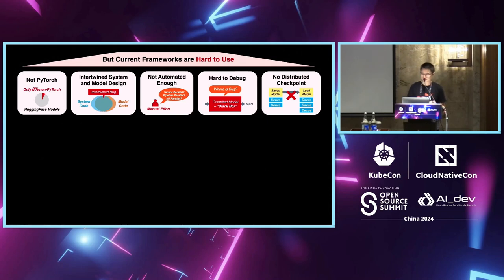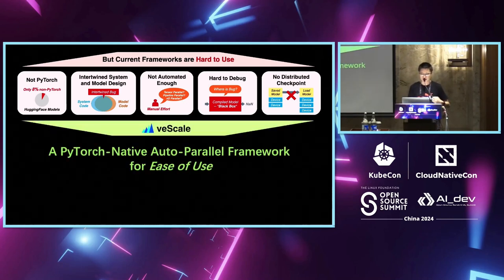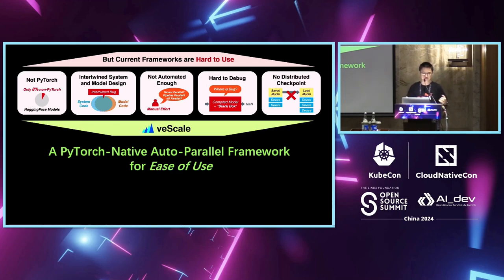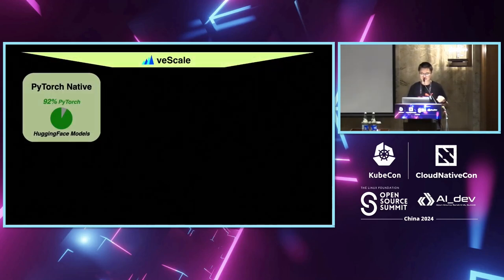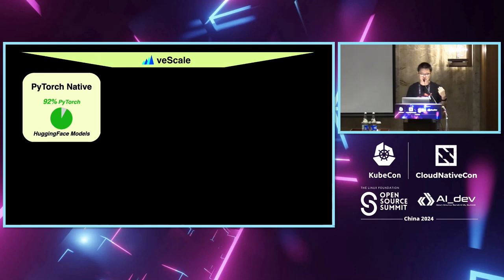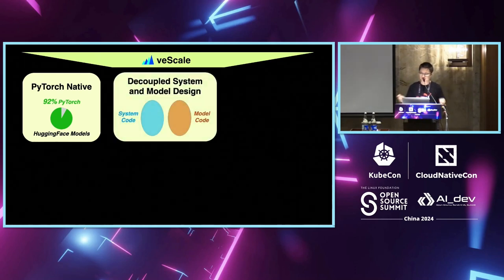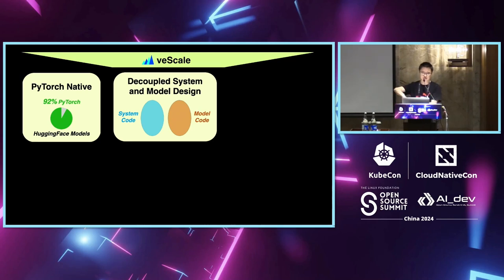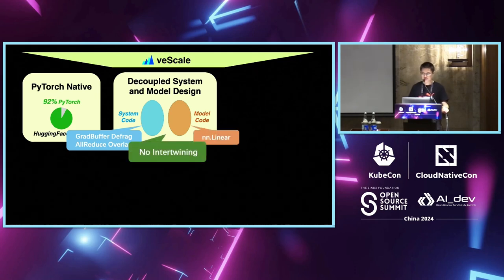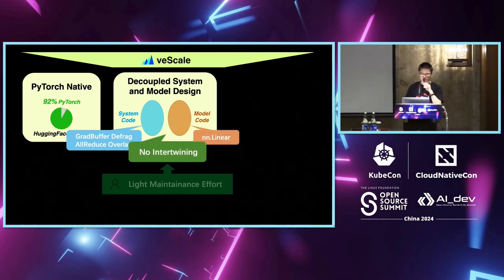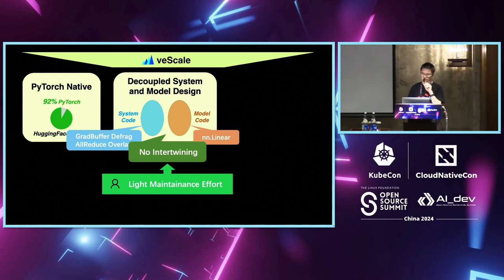To address all five challenges, we propose V-Scale — a PyTorch-native, auto-parallel framework mainly targeting ease of use so we can quickly develop our models. It supports PyTorch-native models, and most importantly it decouples system and model design: model code stays in the model file and system code is in a separate file, completely decoupled. Changing one does not affect the other — no intertwining bugs and minimal human maintenance effort.